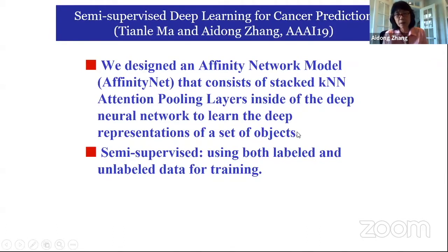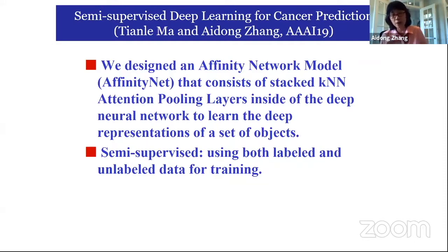We recently published a paper at AAAI, a top AI conference. The title is semi-supervised deep learning for cancer prediction. In that method, we designed a neural network which utilizes both supervised and unsupervised approaches by utilizing the inherent gene relationship and enforcing KNN inside deep learning, redesigning multiple layers with KNN models to quickly converge to a better neural network for prediction.